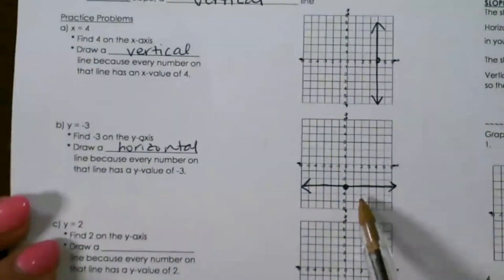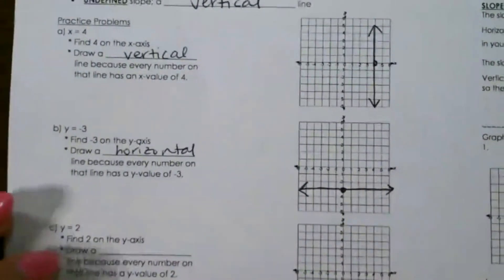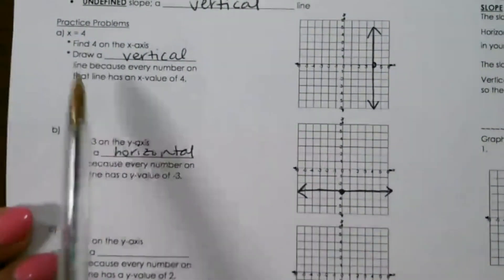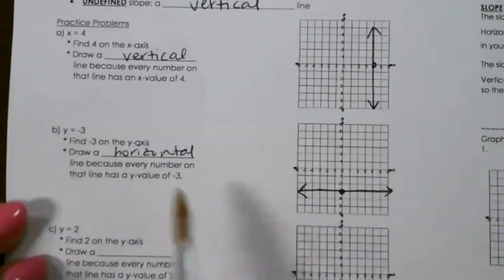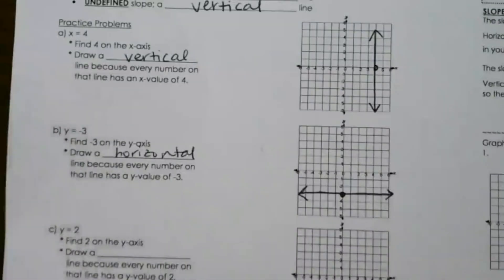So this type of line is going to have a slope of zero. So just remember, x equals equations are vertical lines, and y equals equations are always horizontal lines.